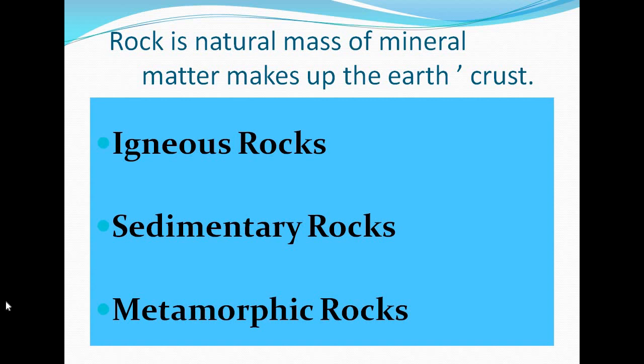Now we will study about these rocks in brief. Igneous rocks are formed during volcanic eruption activities. When the molten magma comes out on the earth's surface, it rapidly cools down and becomes solid. The rocks formed in this way on the crust are known as extrusive igneous rocks. We studied two types of igneous rocks: extrusive and intrusive. Sometimes the molten magma cools down deep inside the earth's crust, and those rocks are known as intrusive igneous rocks.